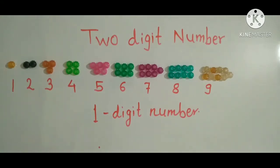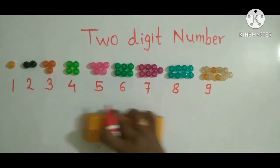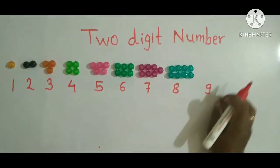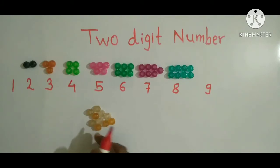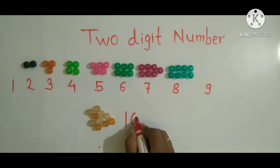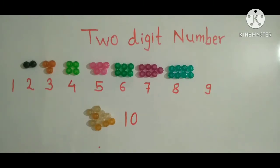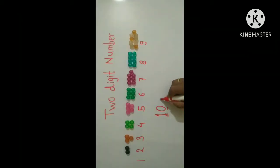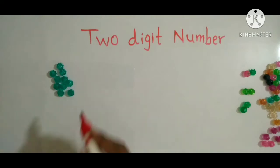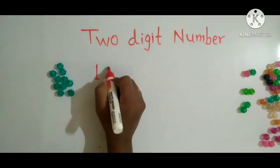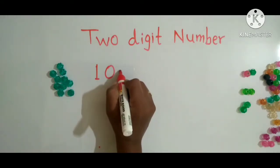Now see here, if we add 1 more to these 9 digits, then we get a total number of beads that is 10, and it is written like this. See here, this is 1 digit and this is another 0. So it is called a 2-digit number. See here, there are 10 digits — so it's a 2-digit number.